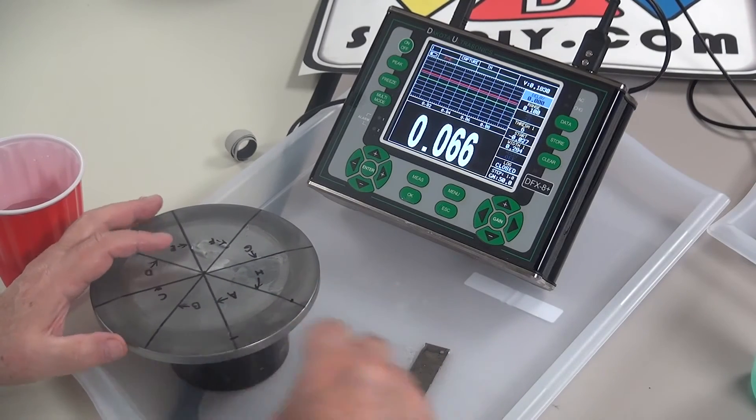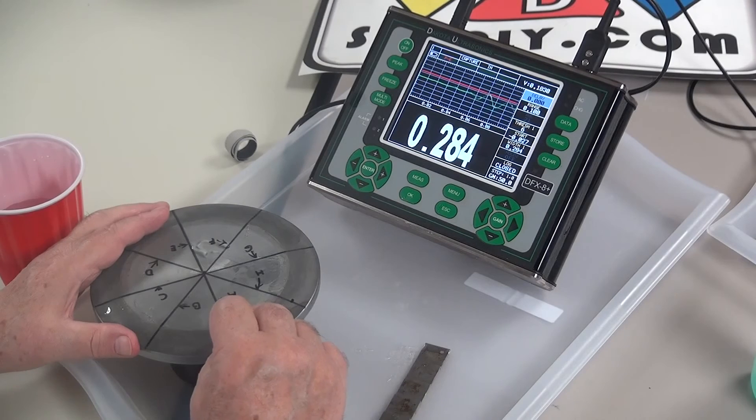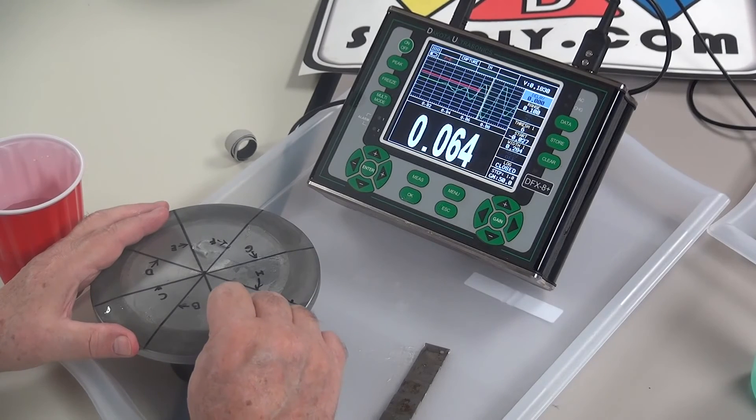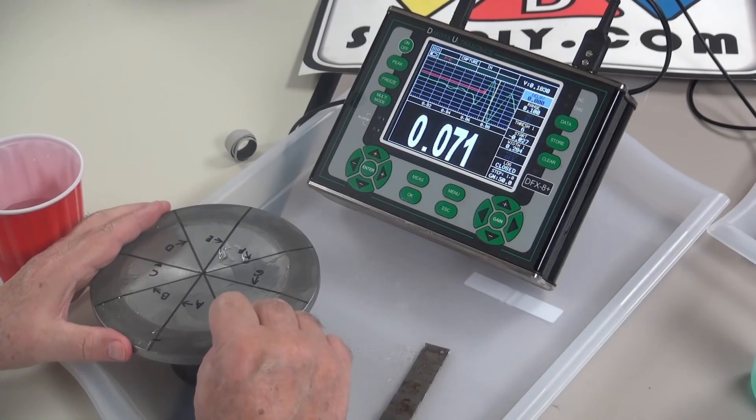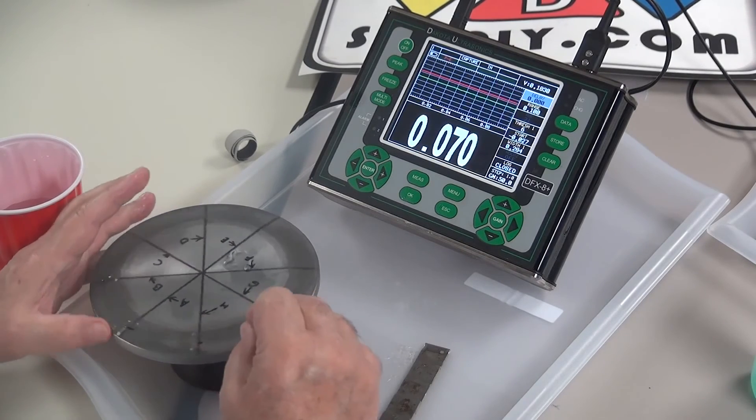Just scan a couple of places from the outside in to see what variation we get between the OD and the ID.